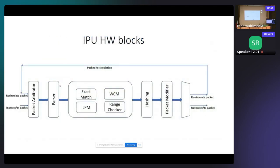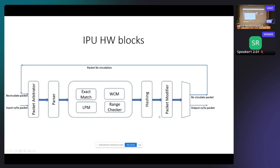This is a generic IPU hardware block diagram. An IPU can have different blocks: exact match, longest prefix match, wildcard match or range checker, hashing, and packet modifier at the end of the hardware pipeline. All these capabilities are covered by the PNA architecture, which is why we write the P4 in PNA to align P4 tables with the IPU hardware. Packets can also be recirculated, with different IPUs having different recirculation capabilities. Packets can also be sent out to the VM or wire from the IPU.